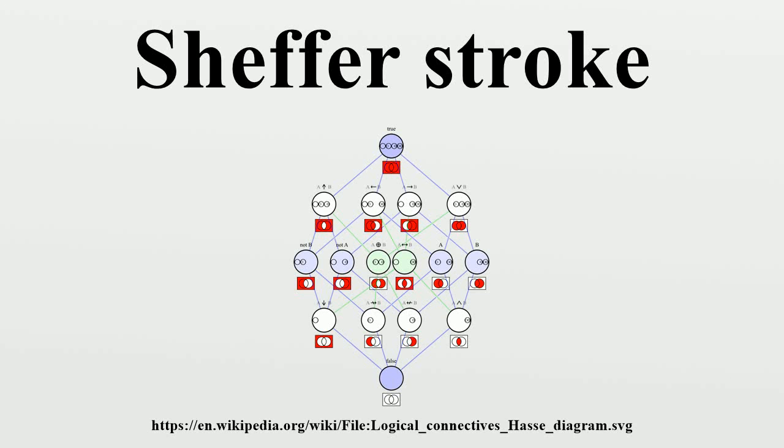In Boolean functions and propositional calculus, the Sheffer stroke, named after Henry M. Schaeffer, written as p|q, denotes a logical operation that is equivalent to the negation of the conjunction operation, expressed in ordinary language as 'not both'.